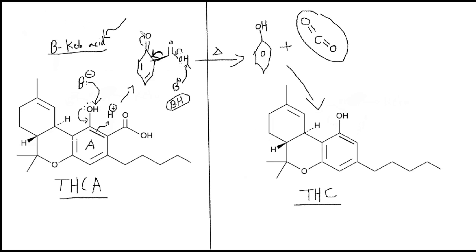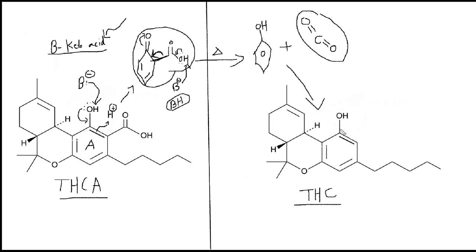So after the first step, you form this intermediate, and then it undergoes decarboxylation with heat to release the CO2. This group leaves and you form your final product, which is highly active. If you have any questions, you can message me on Skype — it's in the description below. Good luck, have a good day.